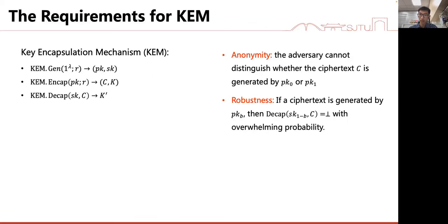In particular, we require the CAM to have two more properties. One is anonymity, the other is robustness. Anonymity for CAM means given a ciphertext C and two public keys, the adversary cannot determine which public key was used to generate the ciphertext. Robustness for CAM means if a ciphertext is generated by one public key, then using another secret key to decrypt it will output failure.